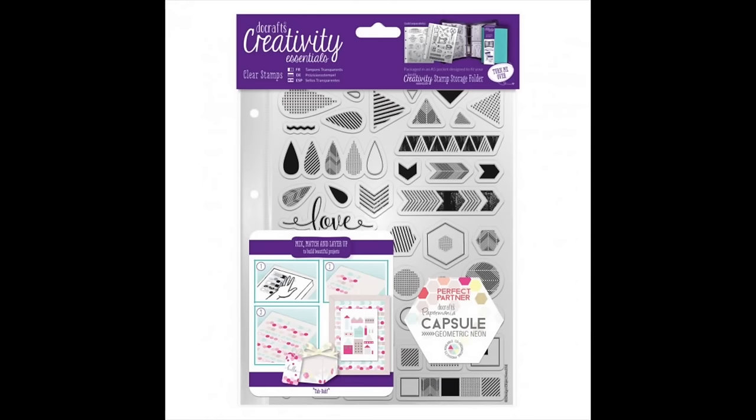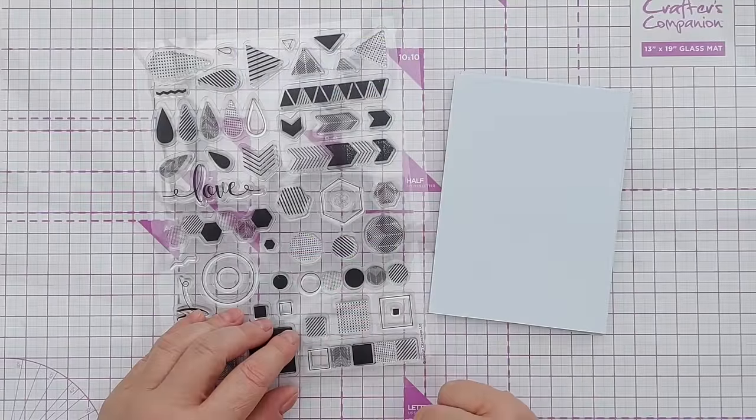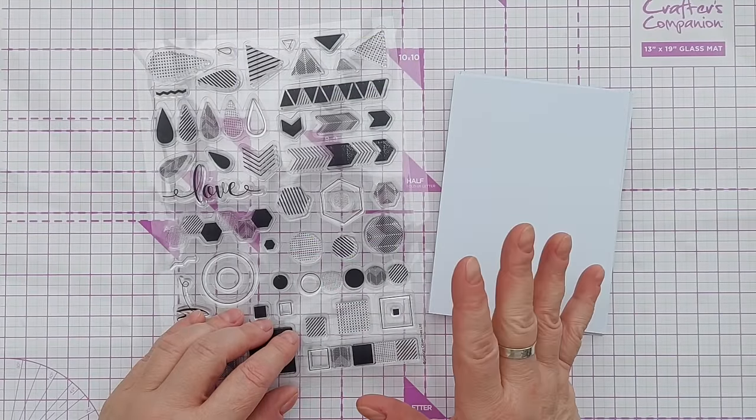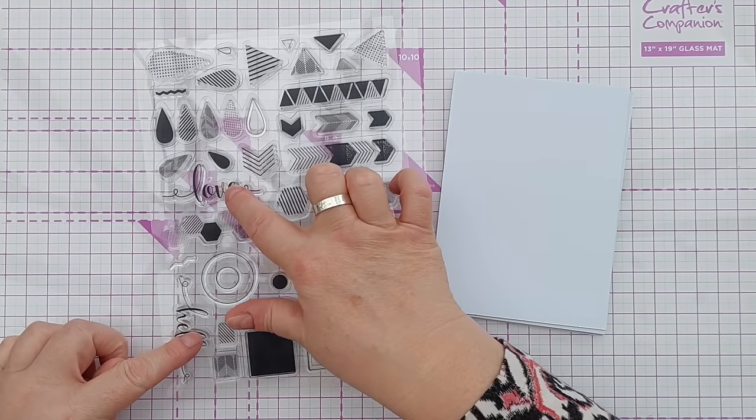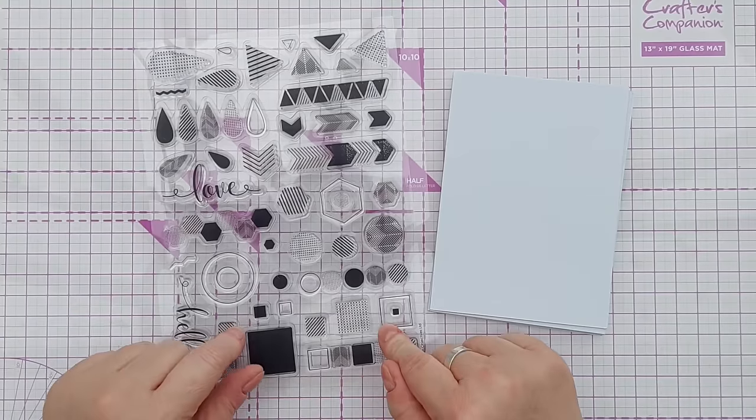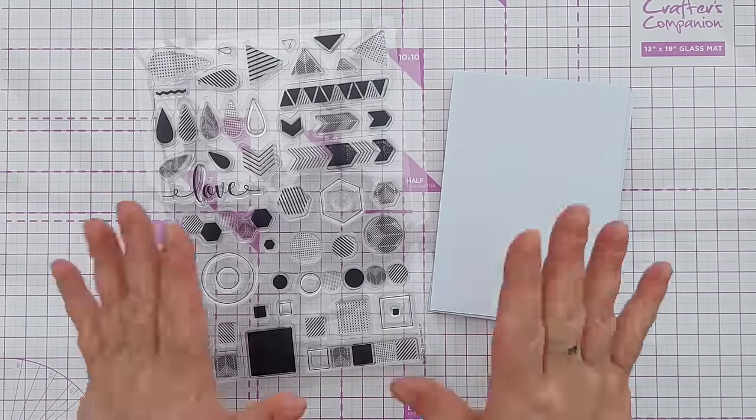A couple of weeks ago I treated myself to this stamp set. It's from Do Crafts and I believe it is called Geometric Neon or maybe just Neon, and it's lots of geometric shapes with a couple of sentiments.